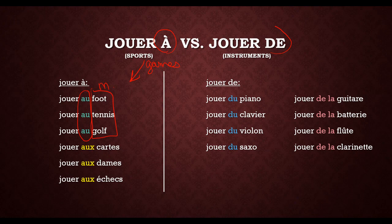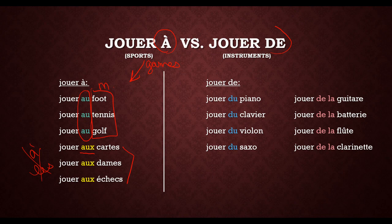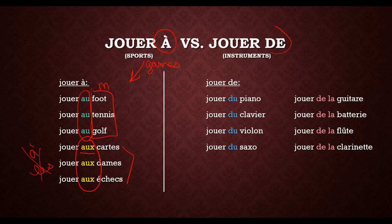Now these are board games and things like that. Jouer aux cartes — playing cards — uses aux because you play with more than one card, so à + les becomes aux. Jouer aux dames is checkers, again with more than one checker piece. Jouer aux échecs is chess, since you play with more than one chess piece. So: jouer aux cartes, jouer aux dames, jouer aux échecs.